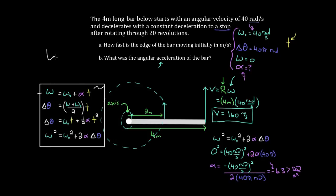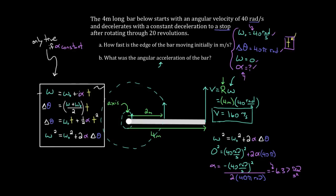To recap: these are the rotational kinematic formulas that relate the rotational kinematic variables. They're only true when angular acceleration is constant. When it is, you identify the three known variables and the one unknown you're trying to find, then use the variable that was left out — neither given nor asked for — to identify which kinematic formula to use, since you want the formula that does not involve that left-out variable.